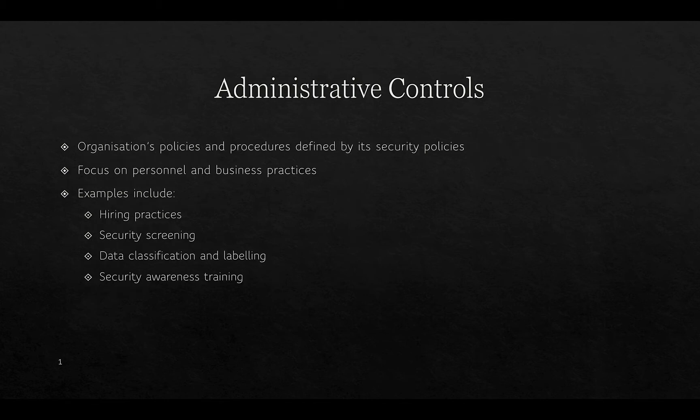Administrative controls are an organization's policies and procedures defined by its security policies. They focus on personnel and business practices, and examples include hiring practices, security screening, data classification and labeling, and security awareness training.